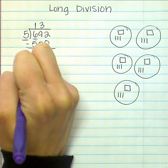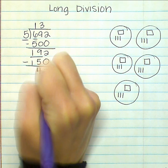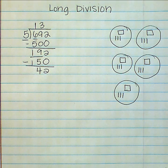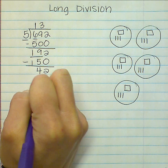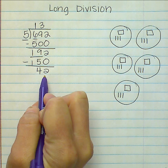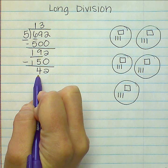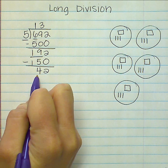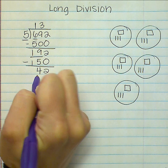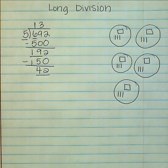I subtract to see how many I have left over. Because I already used my tens, I cannot put these four tens into even groups. So I have to regroup four tens for forty ones, and that gives me forty-two ones to put into even groups.